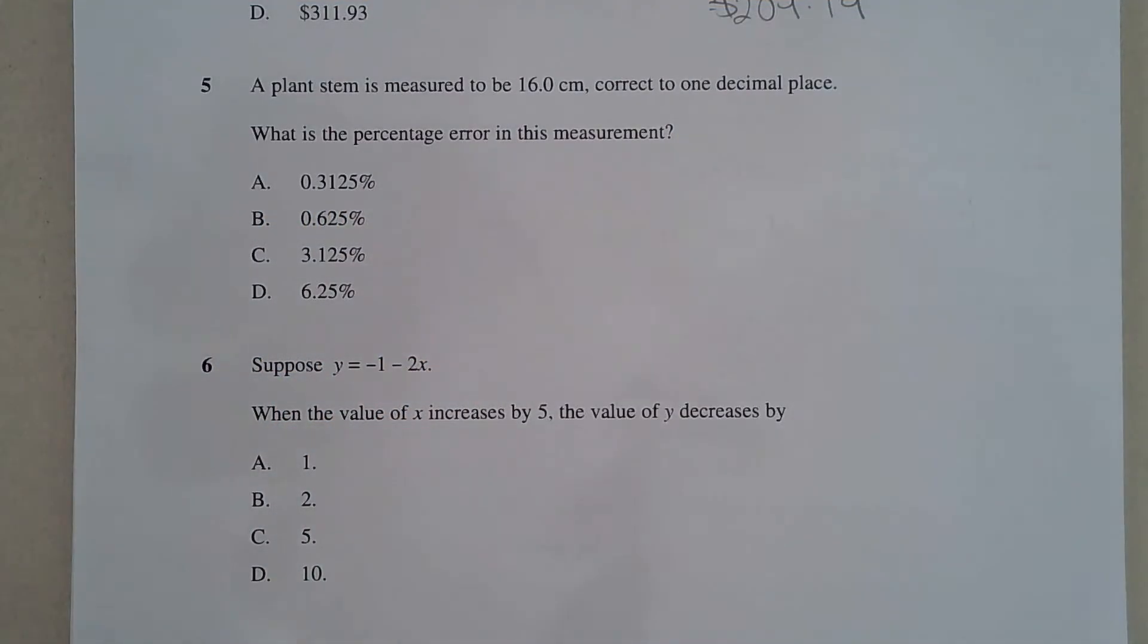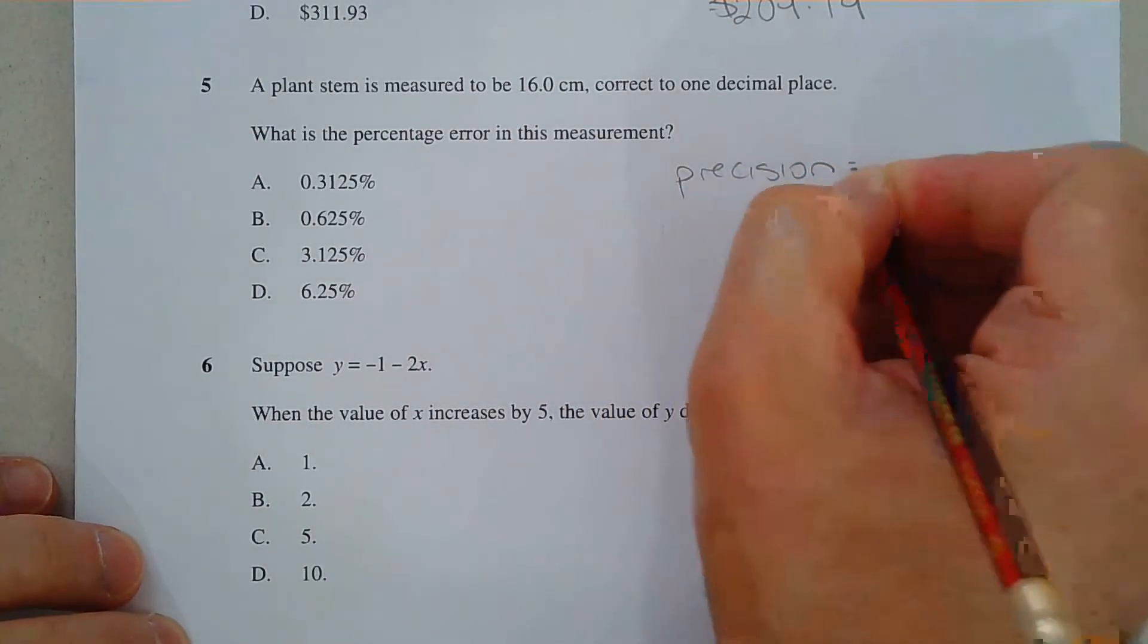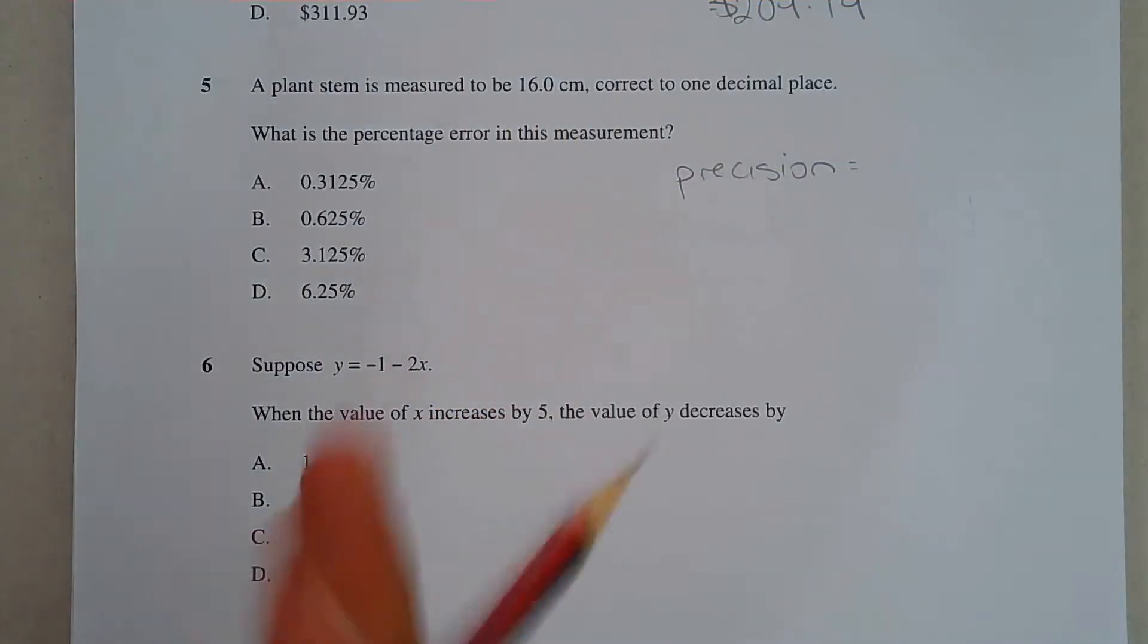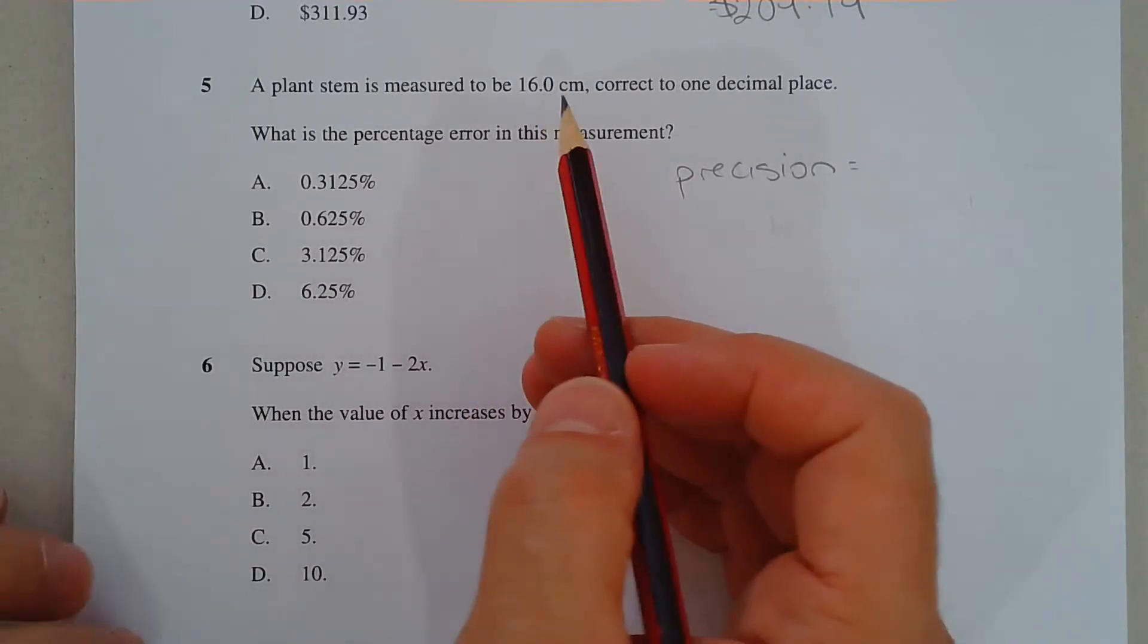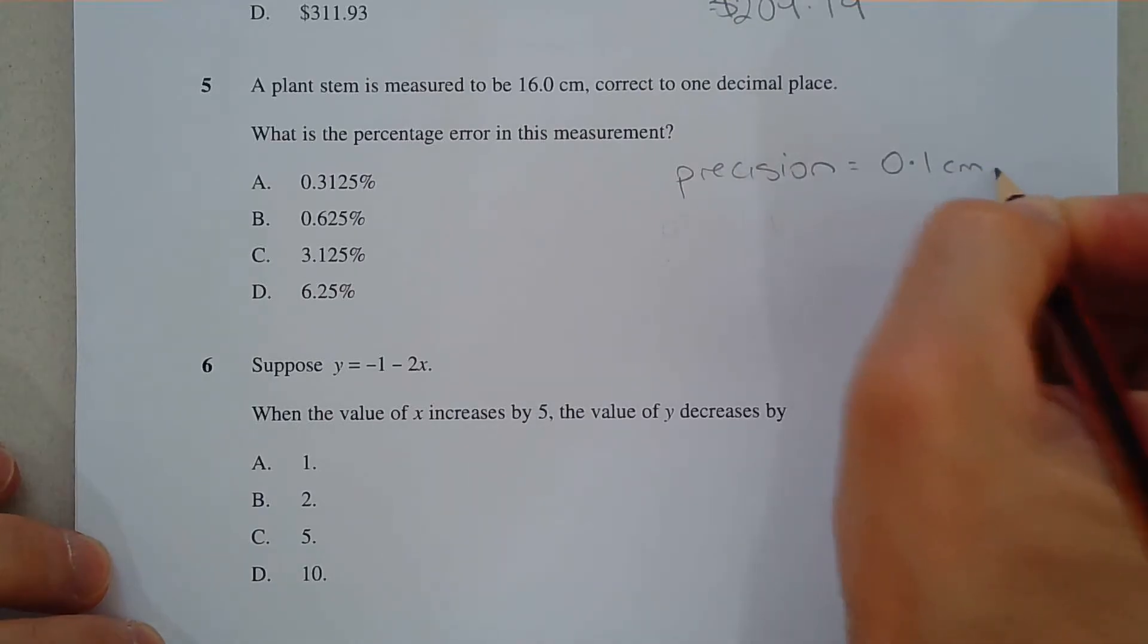Now the first thing we need is the precision. So how precise is this measurement? And that goes by the number of decimal places, or just looking at the measurement there, we can see that the most precise measurement that we could make is in fact the smallest unit, which is 0.1 cm.